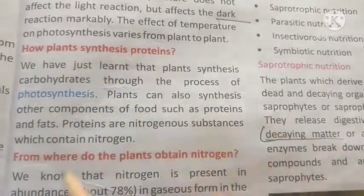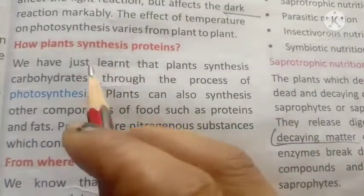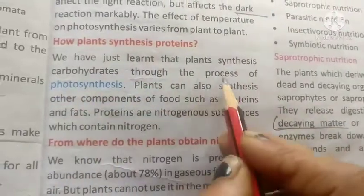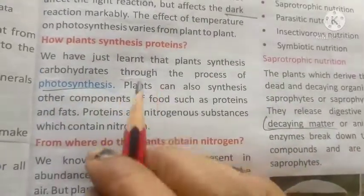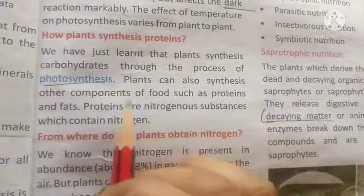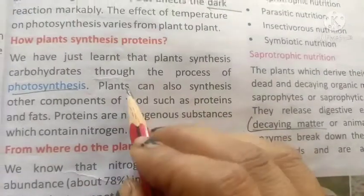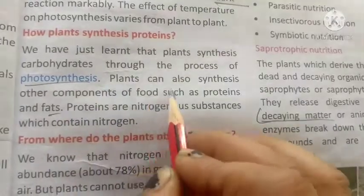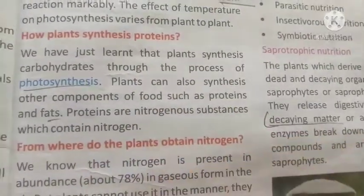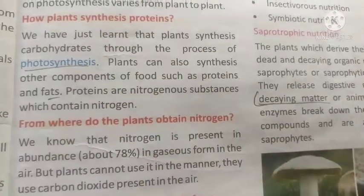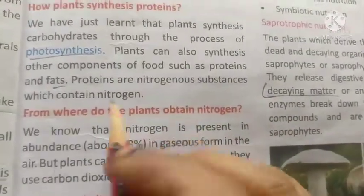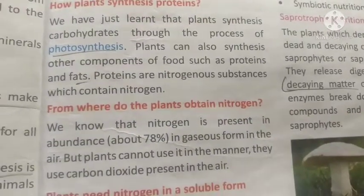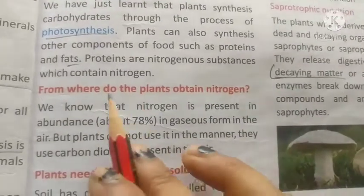How do plants synthesize proteins? We have just learned that plants synthesize carbohydrates through photosynthesis. Plants can also synthesize other components of food such as proteins and fats. Proteins are nitrogenous substances which contain nitrogen.